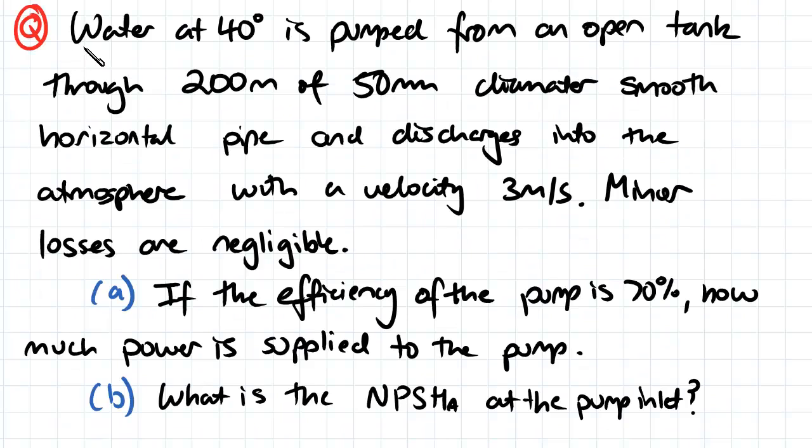So our question here, we've got water at 40 degrees and it's pumped into an open tank through 200 meters of 50 millimeter diameter smooth pipe, which discharges into the atmosphere with a velocity of 3 meters per second. And we're assuming that minor losses are negligible here.